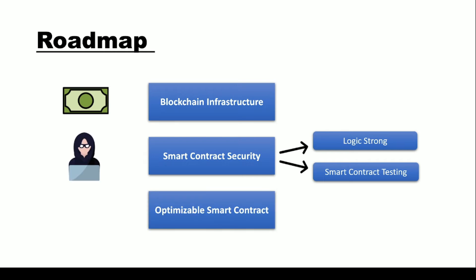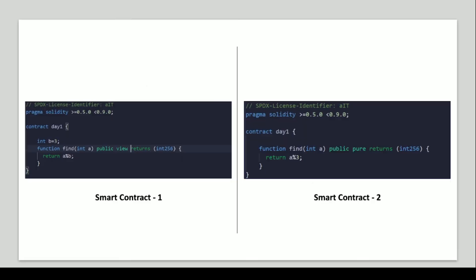The third requirement is that you need to create an optimizable smart contract. This means you need to create a smart contract that doesn't consume a huge amount of gas. Gas is a common term in Ethereum — think of it as the fee you pay for every line of code. You need to create a smart contract that doesn't consume a lot of money. Let me give you an example of this.